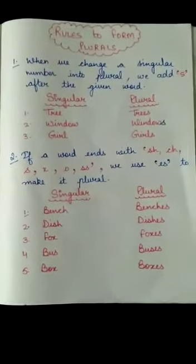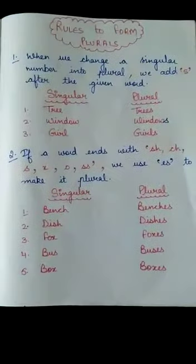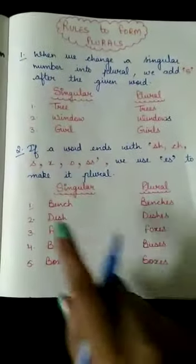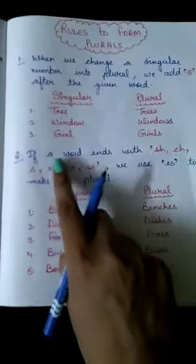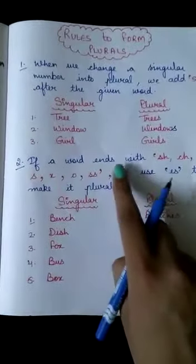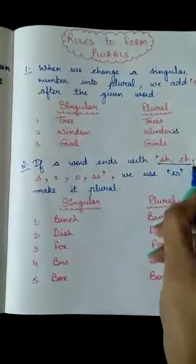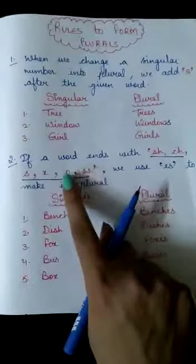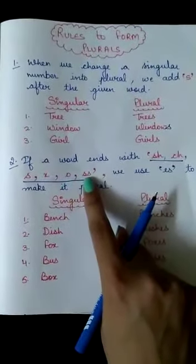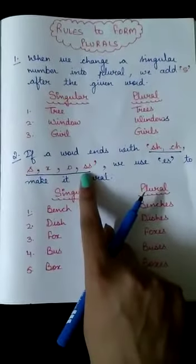Now, the second rule is, listen to your ma'am carefully over here. When a word ends with, whenever your word is ending with S, H, C, H, S, X, O, or double S, whenever a word ends with any of these letters.